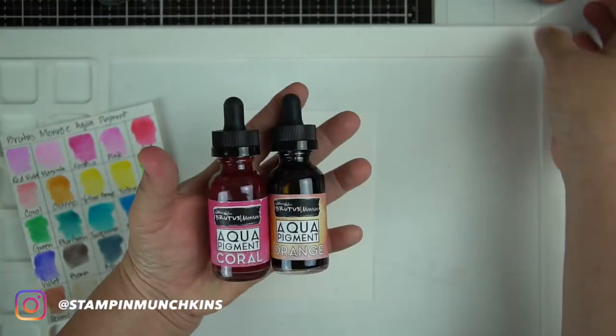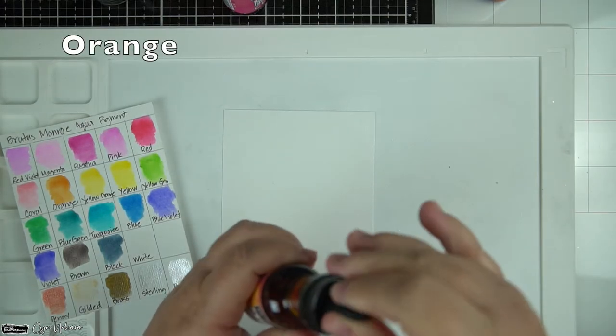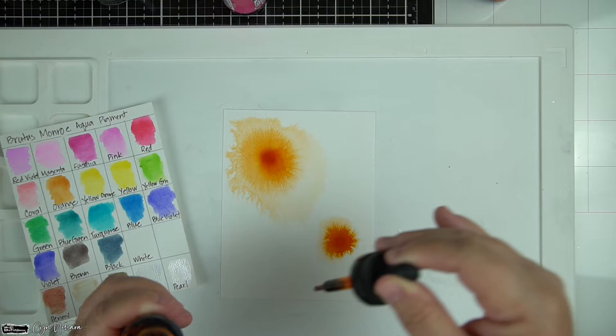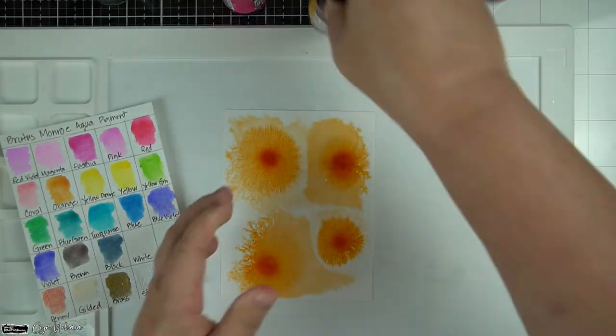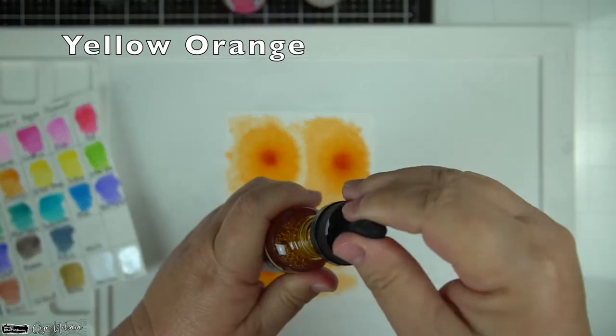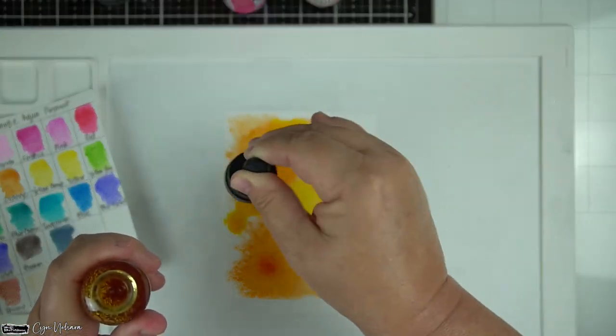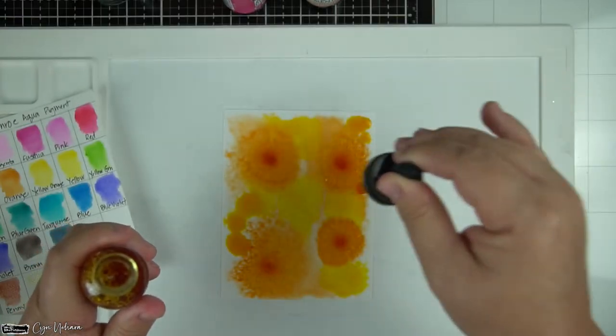So I sprayed the back of the watercolor cardstock so that it will lay flat instead of using tape. And these are the colors that I'm using: coral, orange, yellow, orange. And I'm going to be doing like what we do with alcohol inks and Yupo paper. But I have the colors on the screen, I'm just doing this using watercolor cardstock and watercolor.